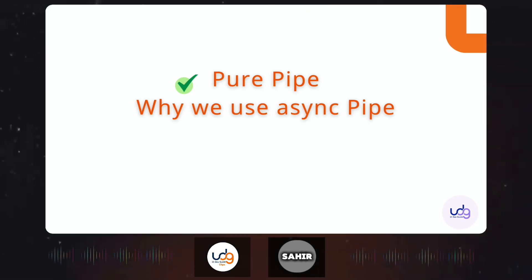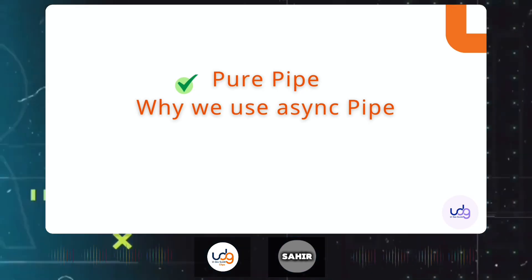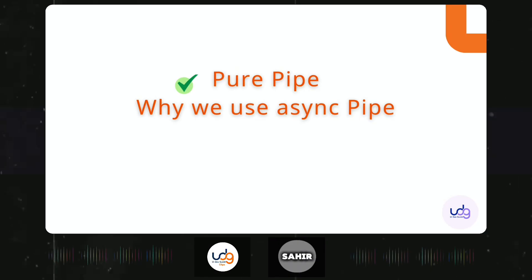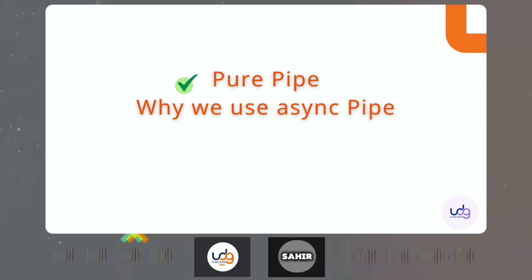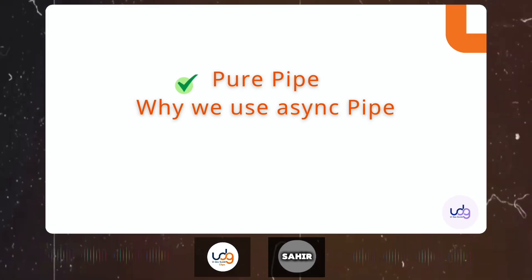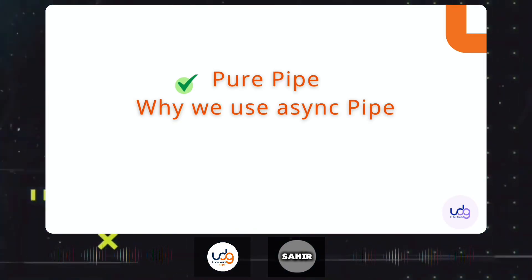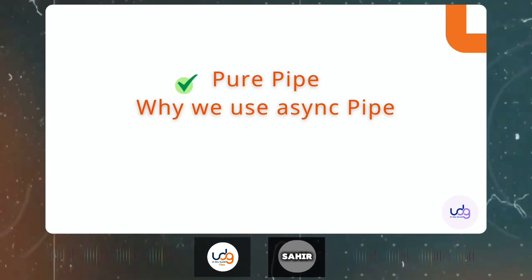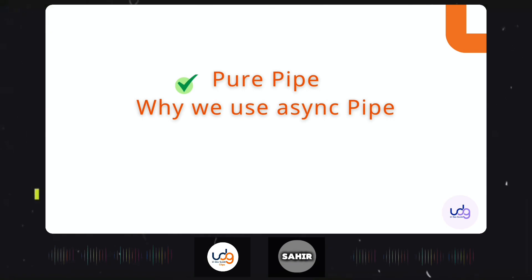Interviewer: Which one is better to use? Candidate: It depends on our preference, but for optimization purposes pure pipes are better, because they don't trigger callbacks as frequently and don't reload as much as impure pipes.